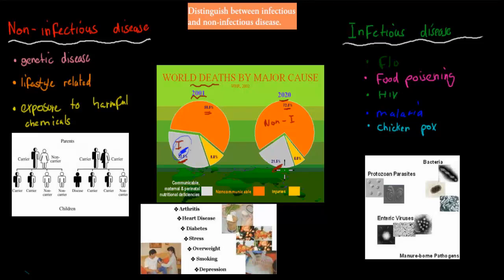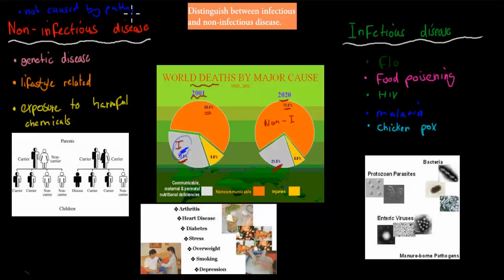Now let's go over the difference between non-infectious and infectious disease. Non-infectious diseases are not caused by a pathogen — that's the major difference. The causes of non-infectious disease are: genetic, lifestyle, or exposure to chemicals.